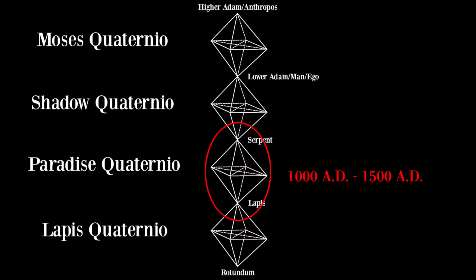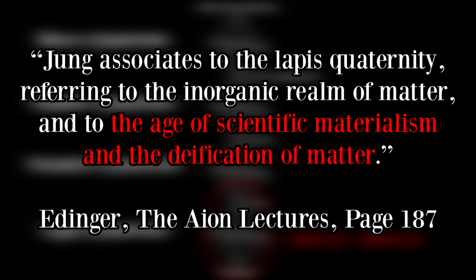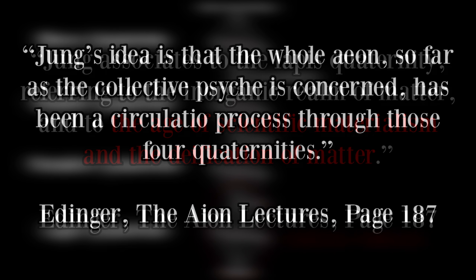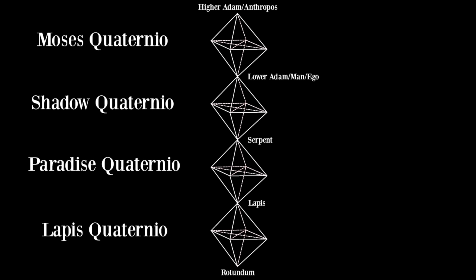This is the time when the spiritual realm moved beyond the church, and human beings tried to interpret the functions of the natural world through spiritual terms. In regards to the Lapis Quaternio, this is the period between 1500 AD and 2000 AD. This is when the spiritual element becomes almost completely eliminated — the age of scientific materialism and the deification of matter. To quote Edinger, Jung's idea is that the whole Ion — that is, the Christian Ion, the Ion of Pisces — has been a circulatio process through these four quaternios.